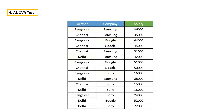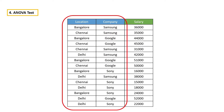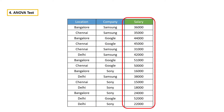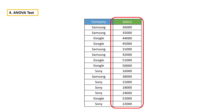Let's say this is our dataset. Here we have two categorical features and we have to figure out whether these categorical features are playing an important role in predicting salary or not. For that, we are gonna use ANOVA. First, let's take this feature and try to figure out whether company makes any difference in salary or not.